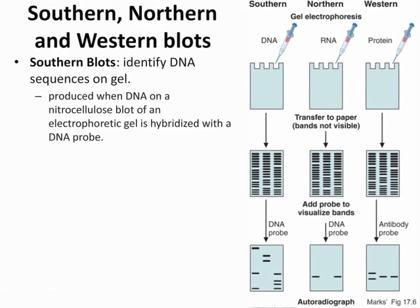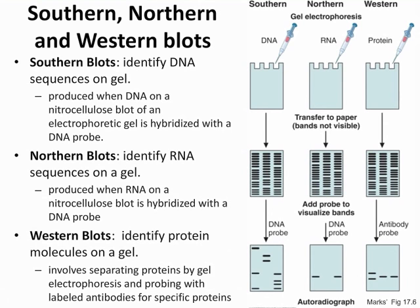Learning objective five covers electrophoresis and three blotting techniques. Southern blotting identifies DNA sequences on a gel. Northern blotting identifies RNA sequences on a gel. Western blotting identifies protein. A DNA probe is used for Southern and Northern blotting, but an antibody probe is used for Western blotting. These are the key differences to remember.